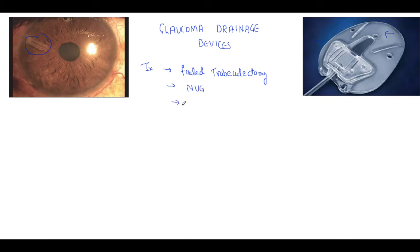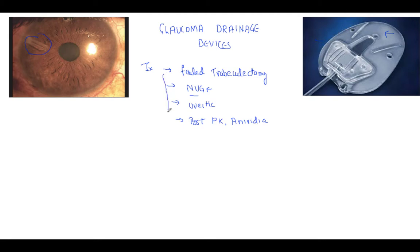The second indication is neovascular glaucoma. As mentioned in ocular ischemic syndrome and central venous occlusion, there is a lot of new vascularization that takes place in the iris and the angle structures. When we do a trabeculectomy surgery, there is a lot of inflammation and due to fibrosis that trabeculectomy fails. Third, we have uveitic glaucomas and complicated glaucoma cases like post-PK, traumatic glaucoma, or cases of aniridia. These are cases where conventional surgeries fail and we have to put a tube.